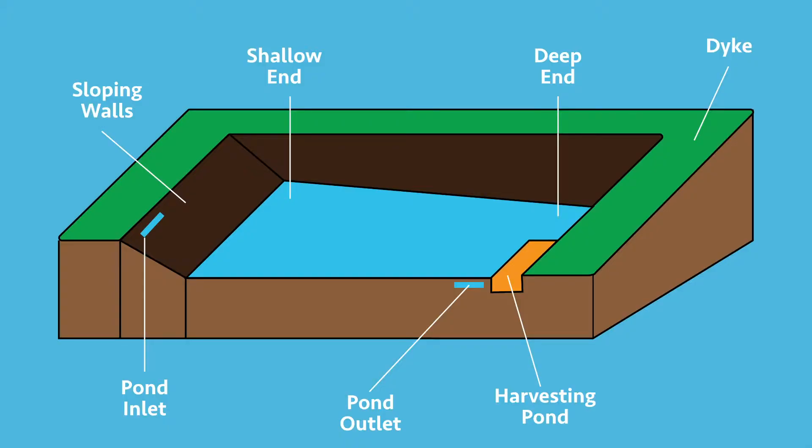The floor of the pond should be slanting from the shallow to the deep end. In the deep end, we usually have a harvesting pond. The height of the shallow end should be 0.8 meters, while the height at the deep end is supposed to be 1 meter. The harvesting pond is constructed at the floor of the fish pond in the deep end, measuring 1 meter long, 0.5 meters wide, and 0.5 meters deep.